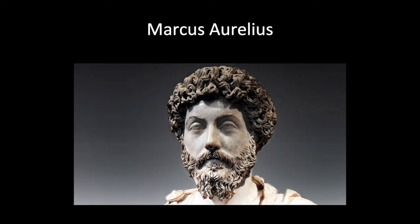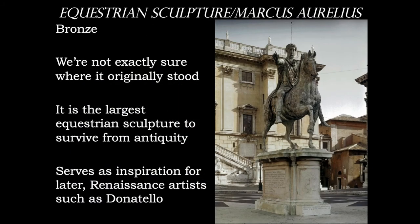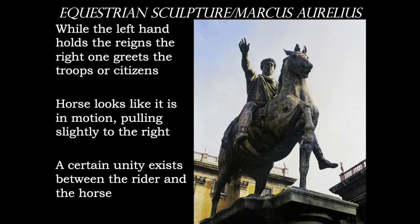Then we'll move on to Marcus Aurelius. This is his bronze equestrian sculpture. We're not exactly sure where it originally stood — it was recovered and is the largest equestrian sculpture to survive from antiquity, which is really sad because Rome would have had a tremendous number of these types of sculptures. They served as inspirations for later Renaissance artists such as Donatello. Marcus Aurelius is guiding the horse with his left hand on the reins, while his right hand is raised up in a greeting to either his troops or the citizens of the city. The horse is pulling off to the right, so we have this unity between the rider and the horse.